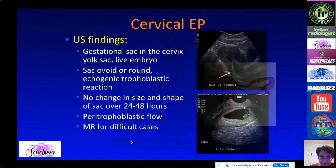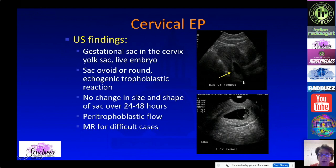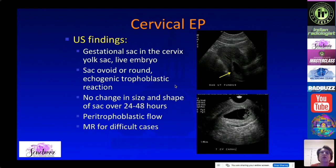On ultrasound you will see a gestational sac within the cervix. If there is a live embryo with a yolk sac, as in this case, the diagnosis is relatively straightforward. You can see the hourglass deformity of the cervix. If you are unsure whether it is a cervical ectopic or an abortion in progress, follow-up in 24 to 48 hours is helpful — with abortion there is usually change, whereas a cervical ectopic pregnancy will not move.